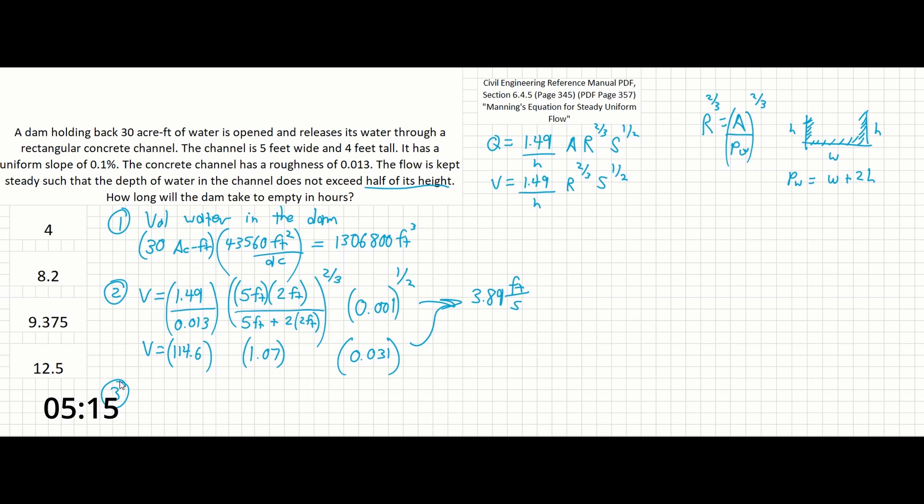And that brings us to step three. We're trying to find the total flow rate. We could have just done it with the other equation as well. And that's going to be Q equals VA, so 3.89 feet per second times 5 feet times 2 feet, because that's the area in the channel. And that's going to give us 38.88 feet cubed per second.